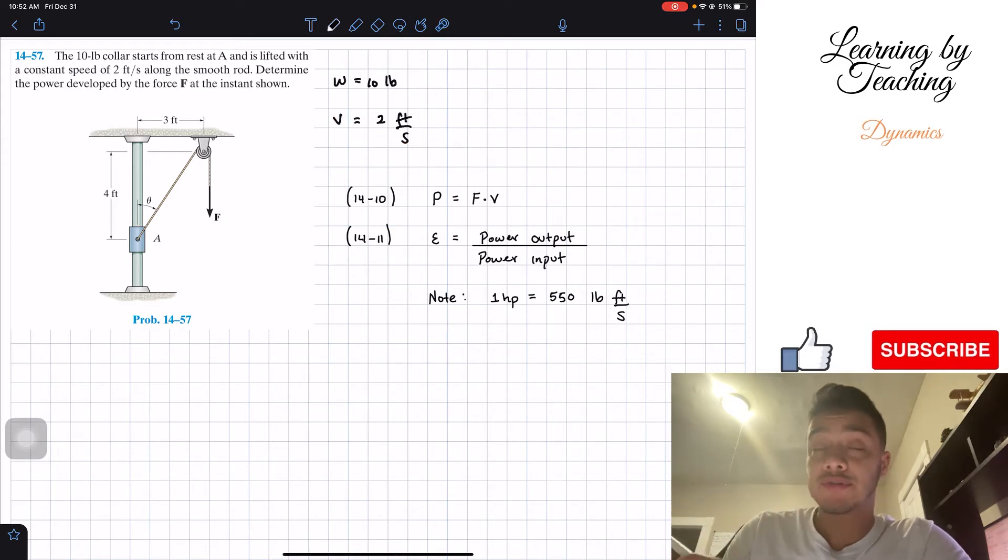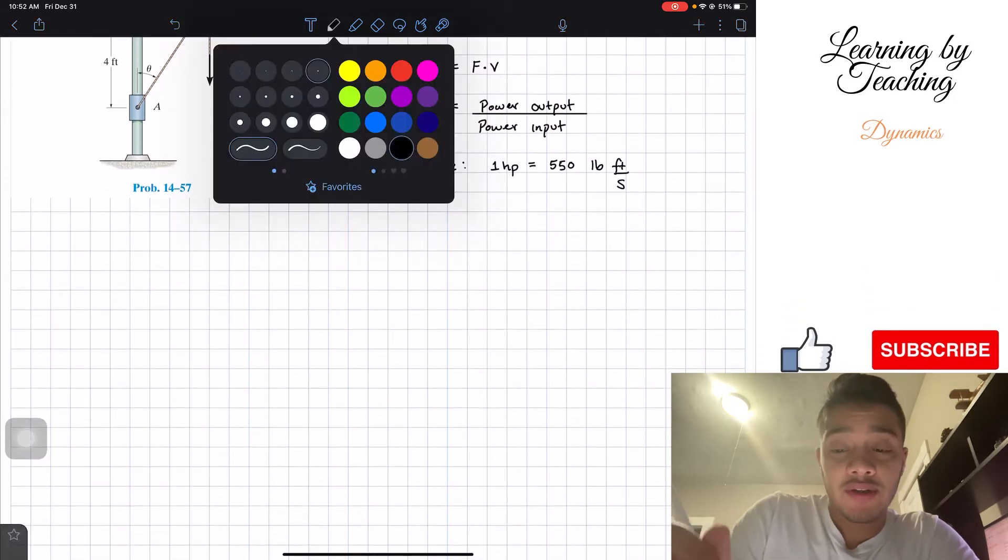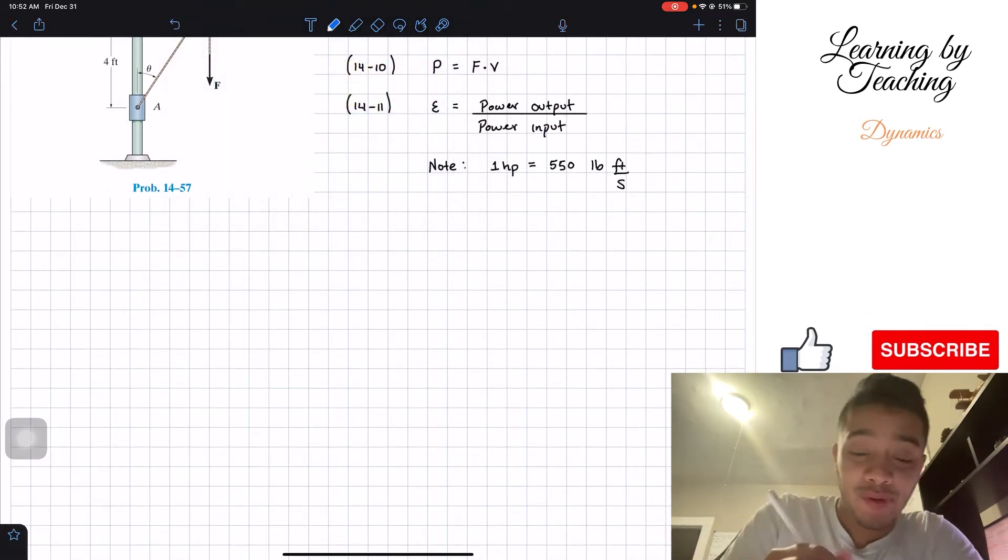So in order to find the force, first we're going to do a free body diagram, just like in any of our problems. And we're going to draw a free body diagram of our collar. So our collar looks something like this, like a rectangular shape.